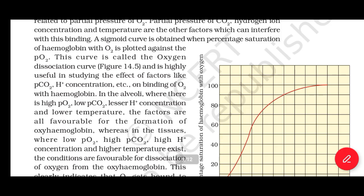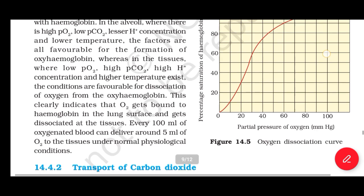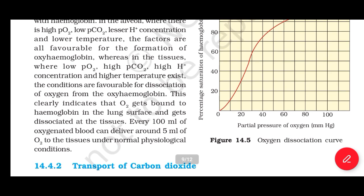In the alveoli, where there is high PO2, low PCO2, lesser H+ concentration, and lower temperature, the factors are all favorable for the formation of oxyhemoglobin. Whereas in the tissues, where low PO2, high PCO2, high H+ concentration, and higher temperature exist, the conditions are favorable for dissociation of oxygen from oxyhemoglobin. This indicates that O2 gets bound to hemoglobin in the lungs and dissociates at the tissues. Every 100 ml of oxygenated blood can deliver around 5 ml of oxygen to the tissue under normal physiological conditions.